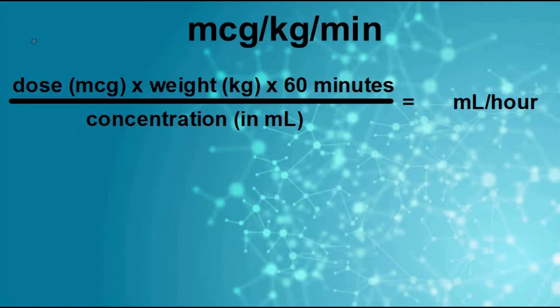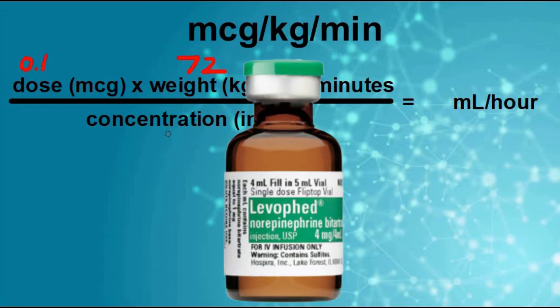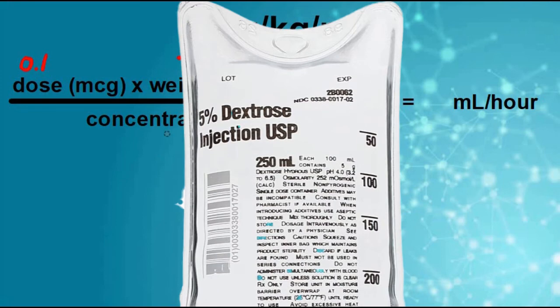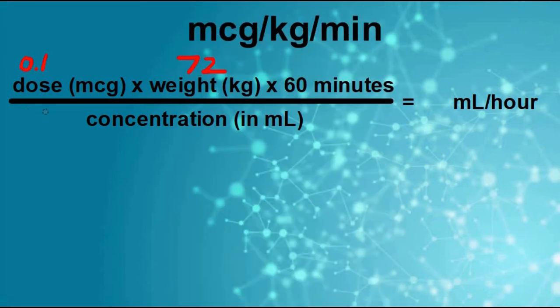Just for the exercise here, let's say our dose is going to be 0.1 micrograms per kilogram on a patient that weighs 72 kilograms. And the concentration hasn't changed. We put that same bottle of levophed that had four milligrams into a bag of 250, and the concentration, you'll remember, calculated out to 16 micrograms per milliliter.